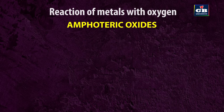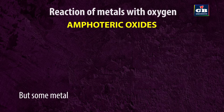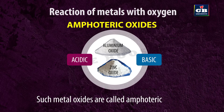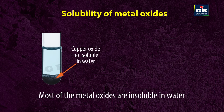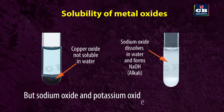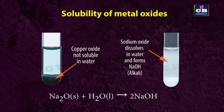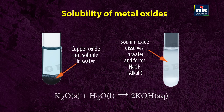Amphoteric oxides. Generally, metal oxides are basic in nature. But some metal oxides like aluminium oxide and zinc oxide show both acidic and basic behavior — such metal oxides are called amphoteric oxides. Solubility of metal oxides: most metal oxides are insoluble in water, but sodium oxide and potassium oxide dissolve in water and produce alkalies. Na₂O + H₂O → 2NaOH; K₂O + H₂O → 2KOH.